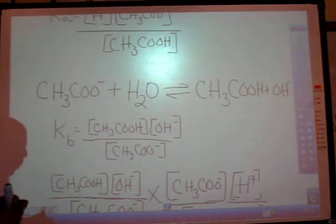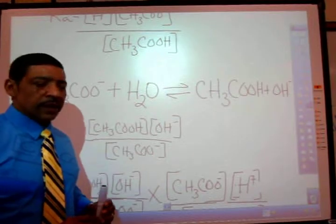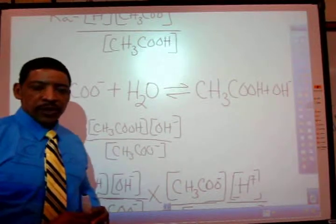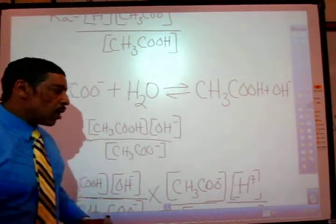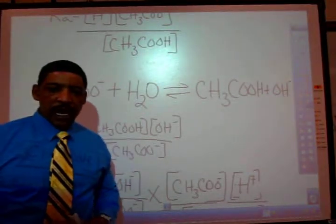Kb is equal to the molar concentration of the acetic acid times the molar concentration of the hydroxide ion all divided by the molar concentration of the acetate ion.